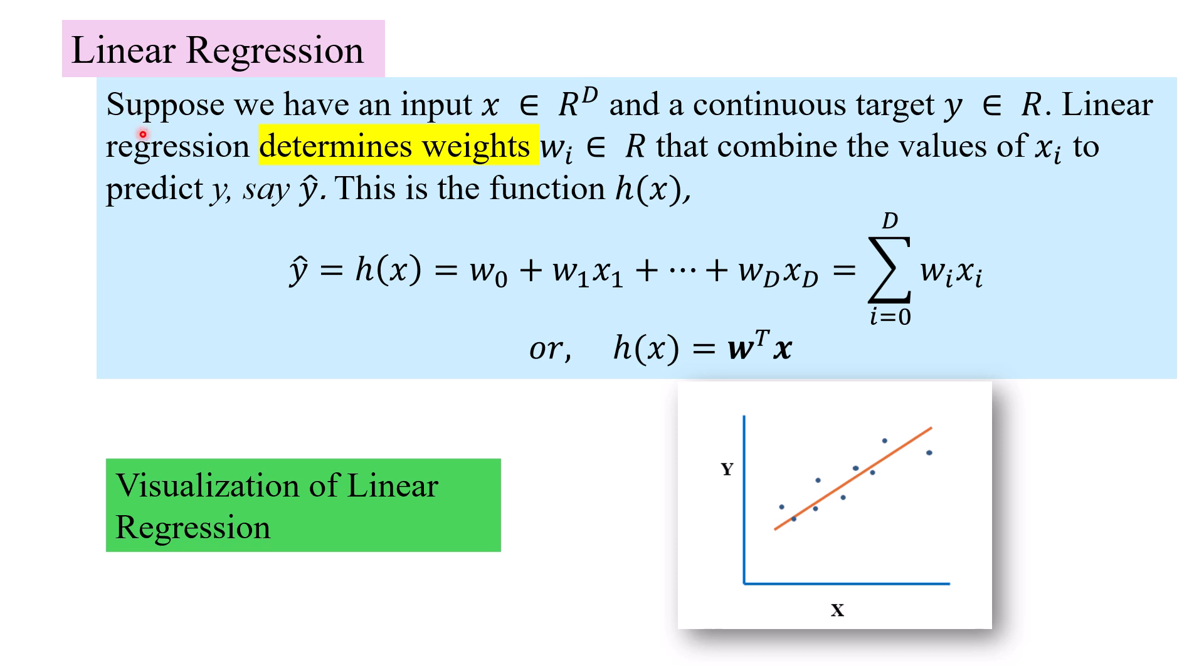Linear regression aims to determine weights such that the values of xi's are combined to predict the target. The input is d dimensional input, so x belongs to R^D and we have a continuous target y which is a real number. We have these weights attached with each of these dimensions and each weight is a real number. The predicted value of y we call y hat or we call it the function h(x) assuming this to be a hypothesis.